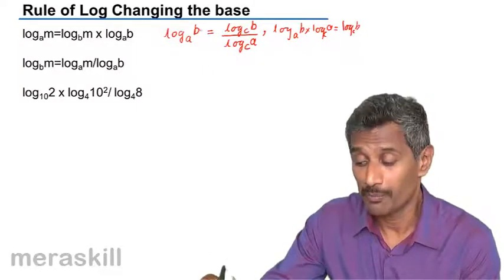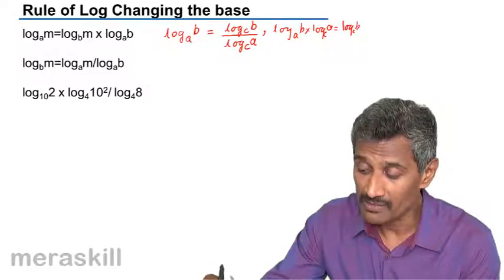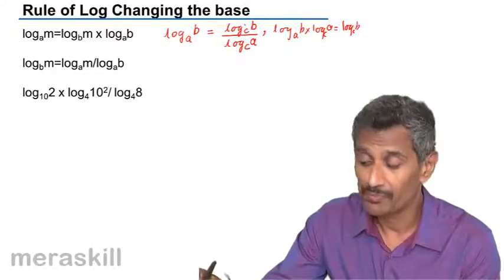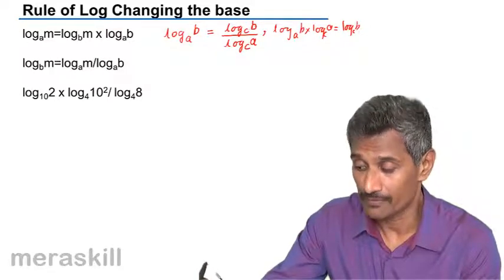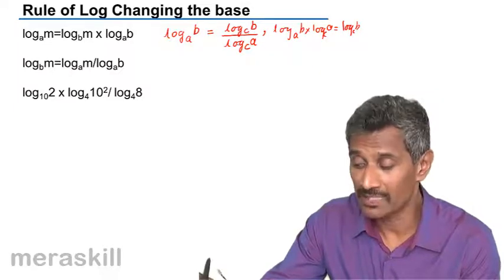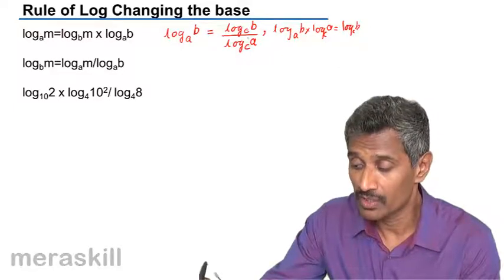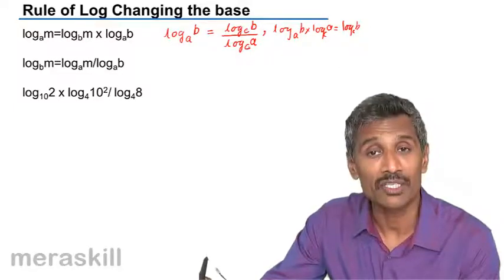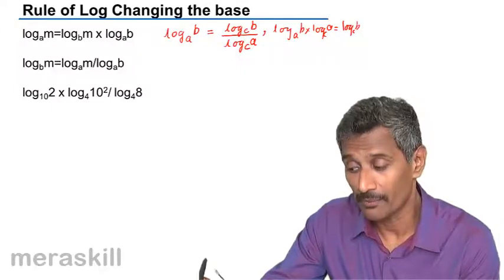So log of B to the base A is what is given to you. You want to change the base from A to C. It is going to be log B to the base C—that is, log of the old power B to the new base C—divided by log of the old base to the new base. So in both the numerator and denominator, the base is the new base. The numerator is the old power and the denominator is the old base.